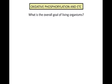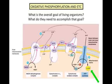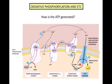The overall goal of living organisms is to stay alive long enough to reproduce and pass on their genes. In order to stay alive, they need energy, which comes from ATP. The ATP is generated as hydrogen ions move through ATP synthase, the enzyme that catalyzes the reaction that phosphorylates ADP.